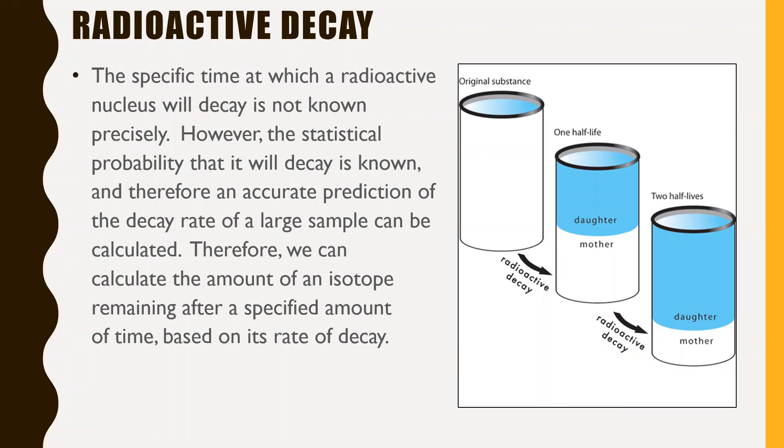Radioactive decay: the specific time in which a radioactive nucleus will decay is not known precisely. When we looked at alpha, beta, and gamma decay yesterday, it's actually not known exactly when that will happen. It's kind of unpredictable. However, the statistical probability that it will decay is known. The chance it will decay at any given moment is actually known. Certain things will decay more frequently than others, so they'll have a higher probability of decaying.